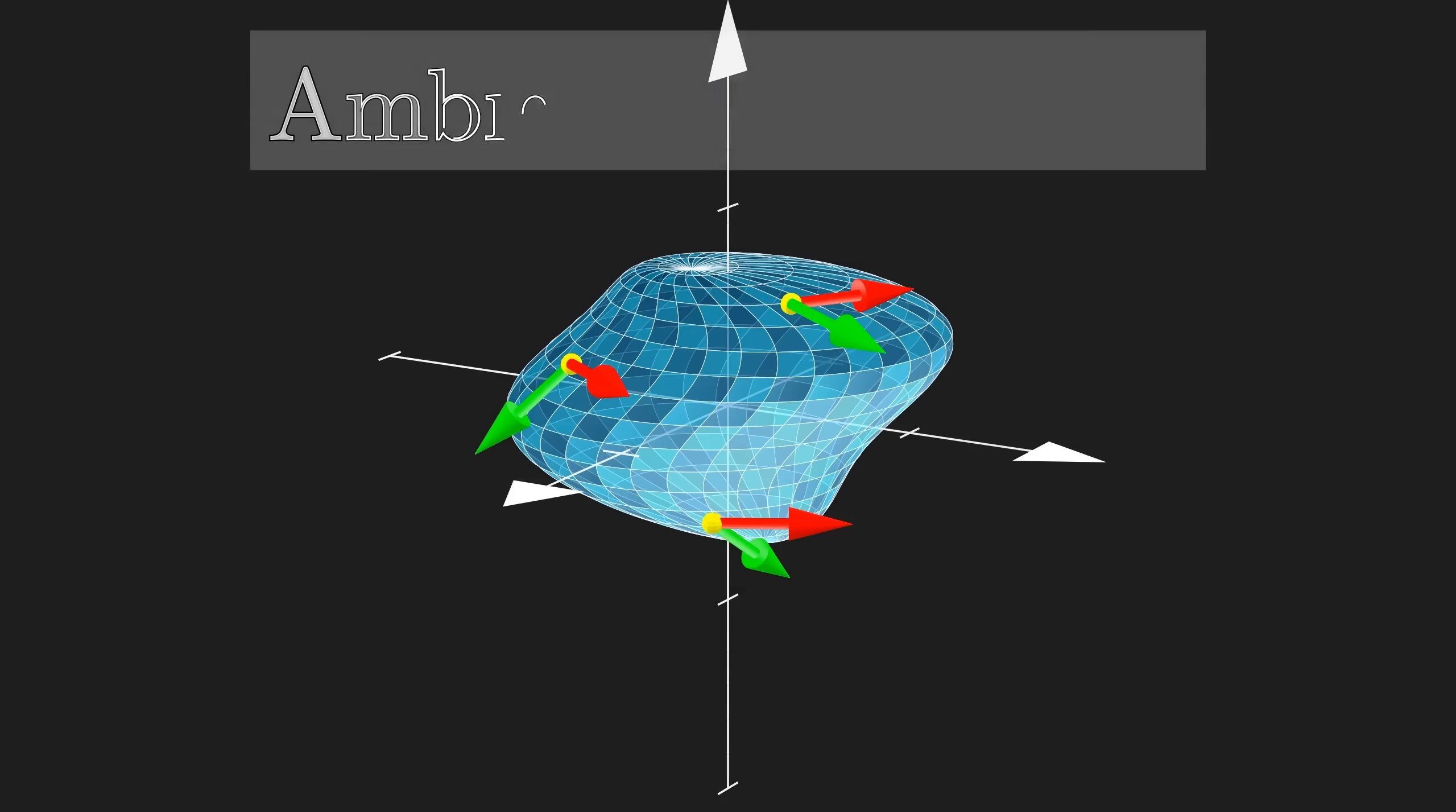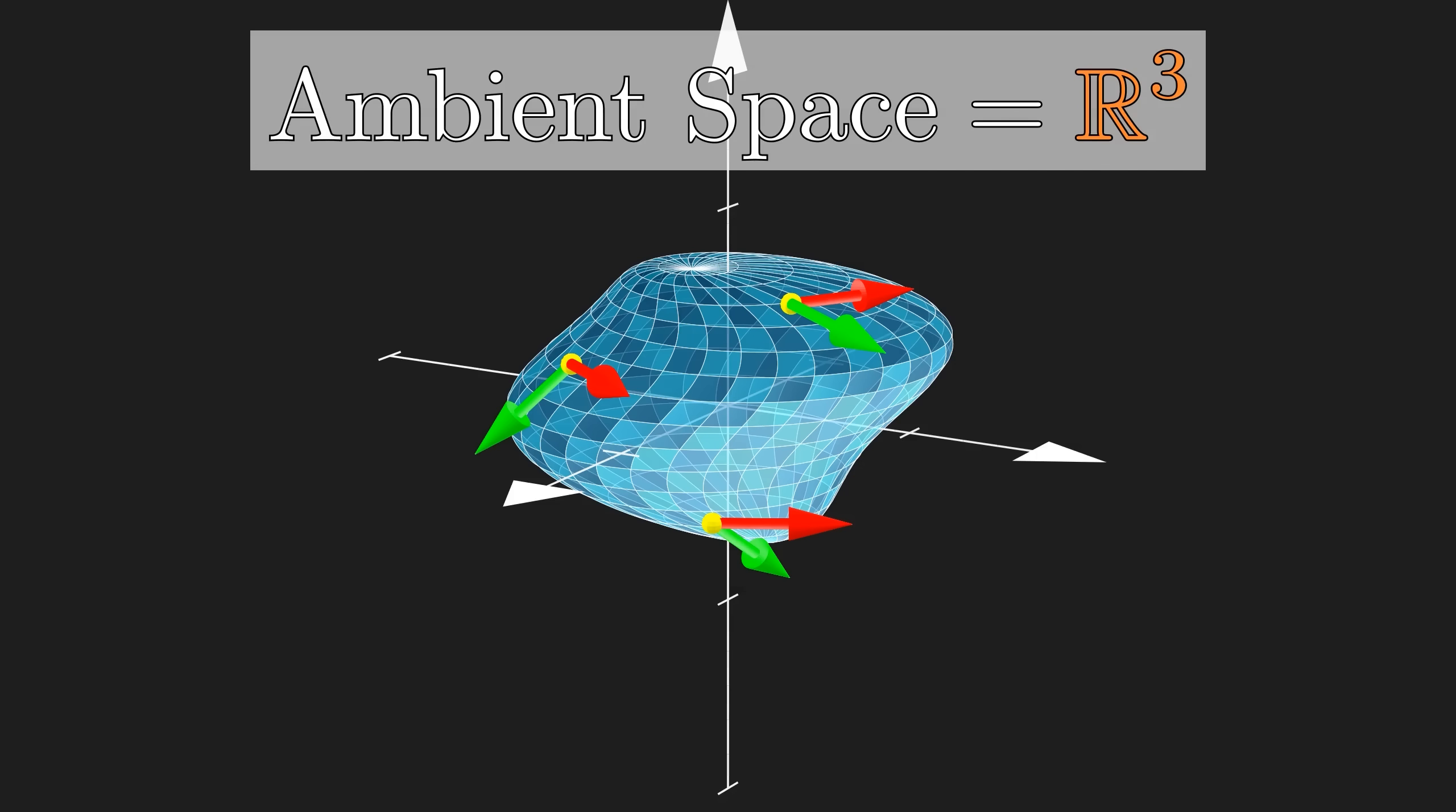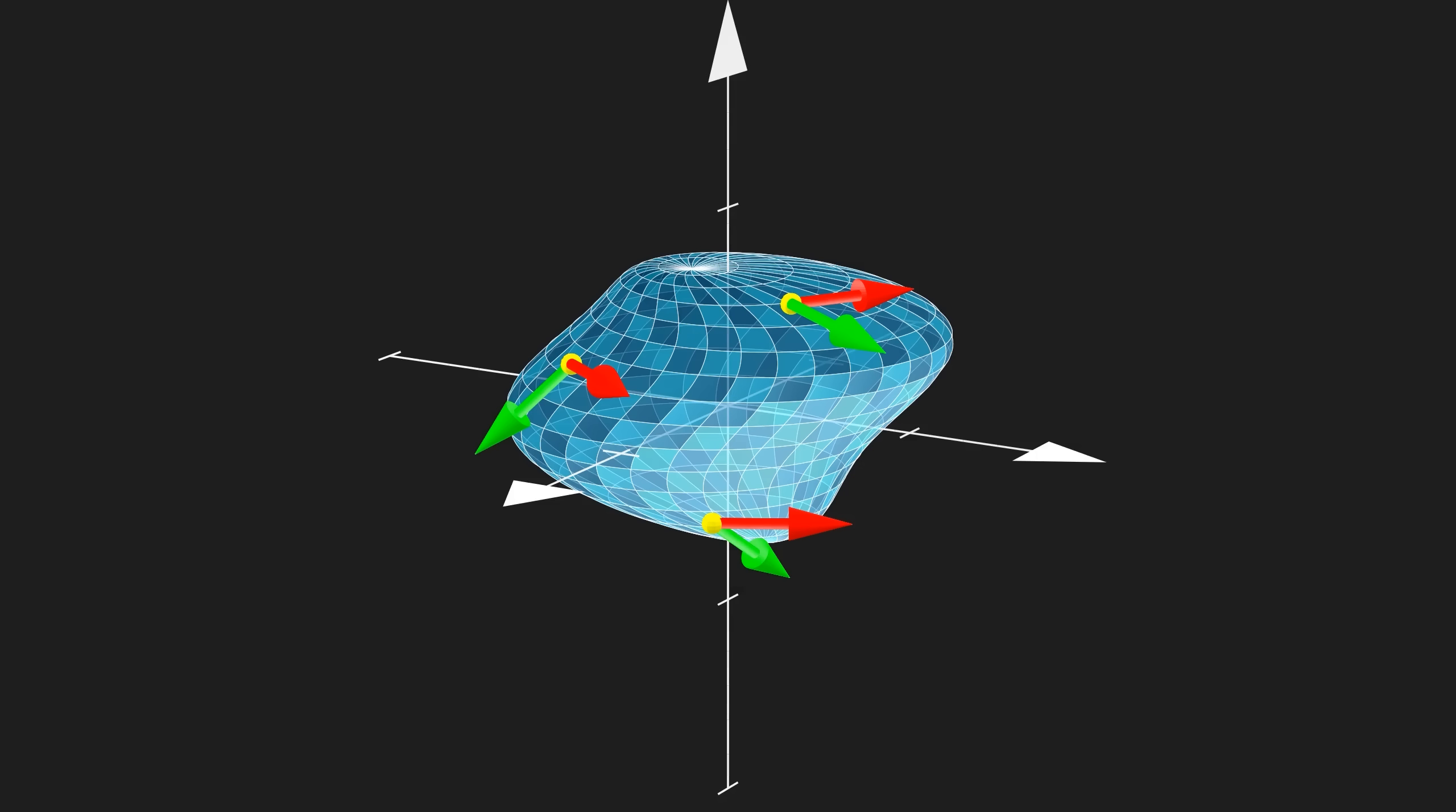The sphere is embedded into R³, and we call that the ambient space, which itself is a three-manifold. Flatlanders living on the sphere would have no idea it's embedded in a higher dimension. But, as 3D creatures, we are aware of that extra up-direction. The number of extra dimensions is called the co-dimension of the embedding, which in this case is 1.